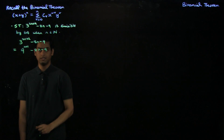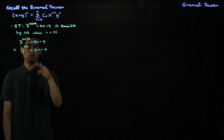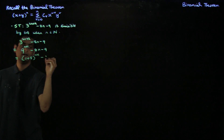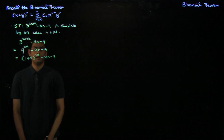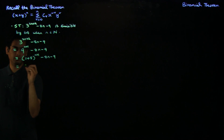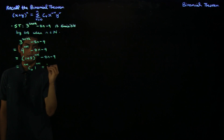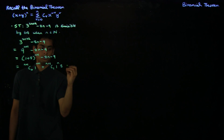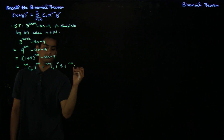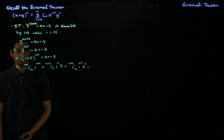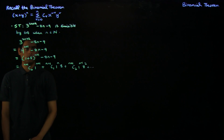This looks more promising because you have 9^(n+1), and you have a 9 and an 8n. So you can get rid of the 8n by writing 9 as 1 + 8, raised to the power n+1, and you have minus 8n minus 9. Now you have a term which you can expand using the binomial theorem. Expanding: this is (n+1)C0 * 1^(n+1) + (n+1)C1 * 1^n * 8 + (n+1)C2 * 1^(n-1) * 8^2, and so on.